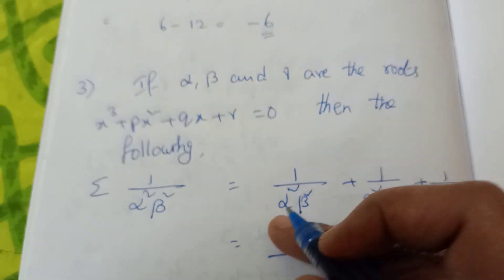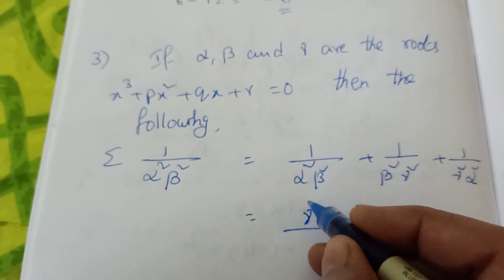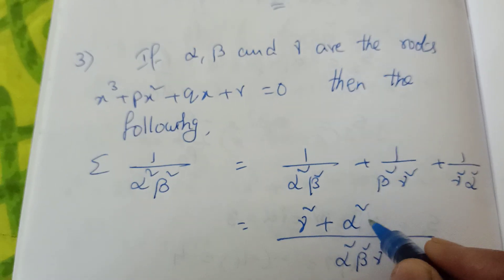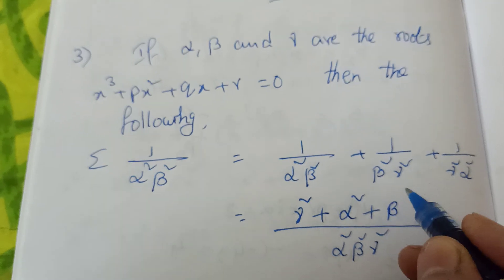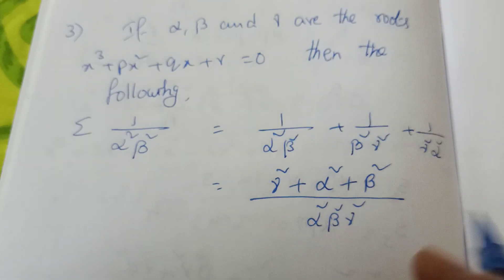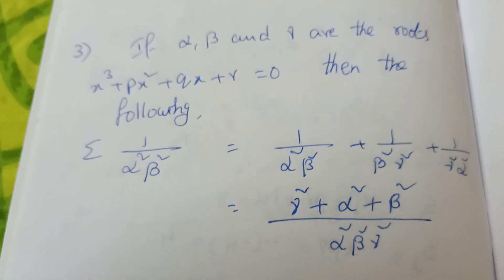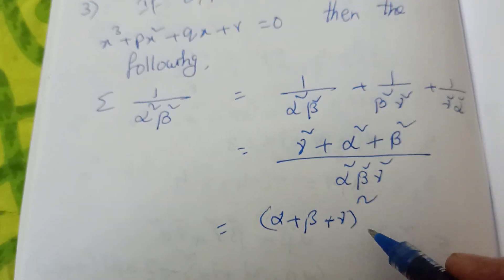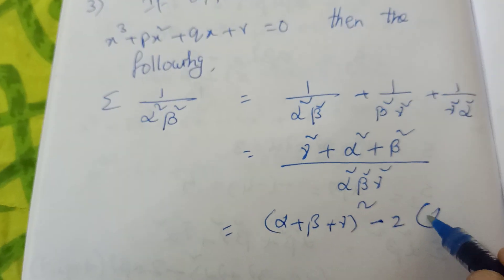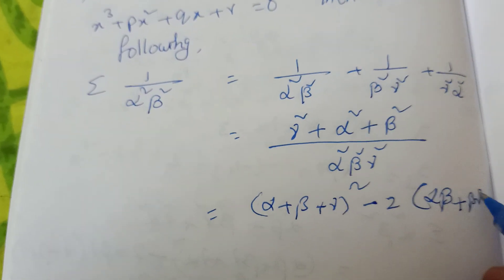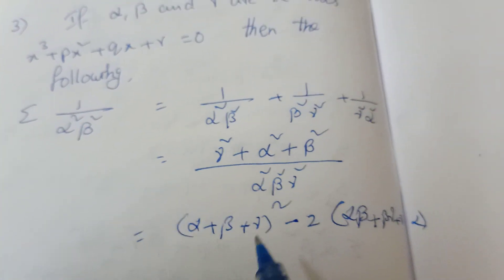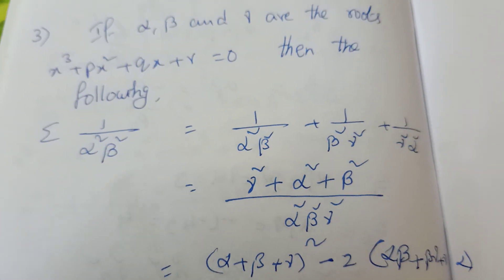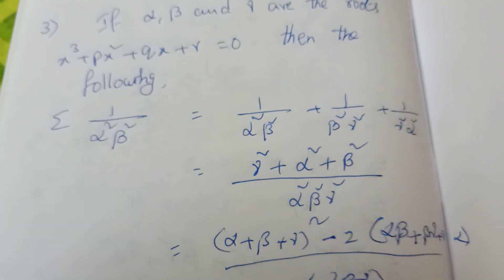Then numerator will be: here α²β² is there, so Gamma square will be the numerator — Gamma² plus Alpha² plus Beta² — in each term respectively. So numerator becomes γ² plus α² plus β² — that is α² plus β² plus γ², divided by (αβγ)² — Alpha Beta Gamma whole square.